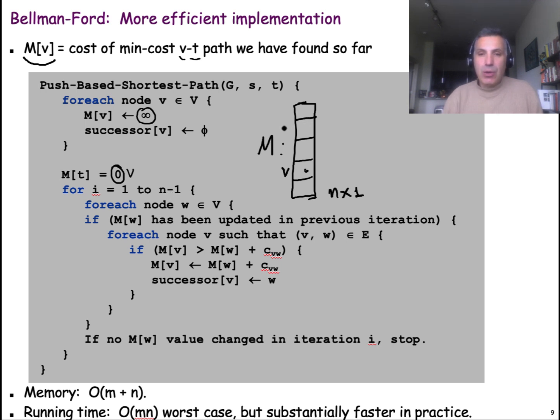But here, we only consider those nodes W for which there was an update in the previous iteration. This means that for that node W, we now have a lower cost to go to the target than in the previous iteration. So, if there is an edge from a node V to that particular node W, then, and only then, we check whether the cost to go from V to the target is greater than the cost to go from V to W and then from W to the target. If that is the case, then, of course, it's better to use W as the next hop, the successor in the path that originates from V, and we update the element M of V.